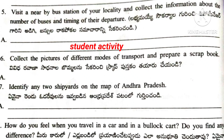Question number 6: Collect the pictures of different modes of transport and prepare your scrapbook. You have to collect the different modes of transport pictures — that means the 3 modes: Land transport, Air transport, and Water transport. Collect pictures related to them and prepare your scrapbook.